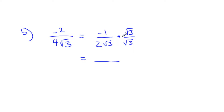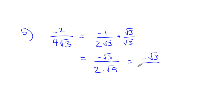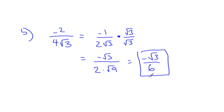So negative 1 times root 3 is just negative root 3. And the bottom is 2 times root 9, which gives us negative root 3 over 6. And that's my final answer for that. Our denominator is now just a nice whole number — we don't want square roots on the bottom.